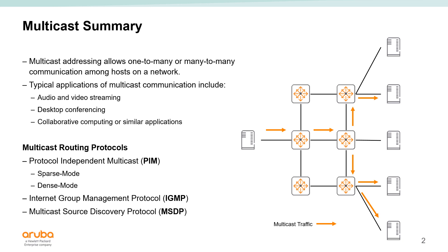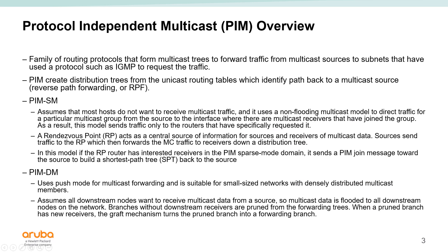The multicast routing protocols that we're leveraging on the AOS CX switches are Protocol Independent Multicast sparse mode and dense mode, IGMP (Internet Group Management Protocol), as well as Multicast Source Discovery Protocol. PIM is really a family of routing protocols that helps form multicast trees that enables us to forward this traffic across a routed network.